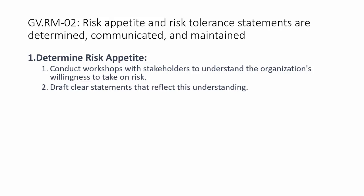Once objectives are communicated and agreed, the second step is setting the risk appetite — because until you set the boundary based on capacity, you can't drive the process. The second NIST requirement states that risk appetite and tolerance statements are determined, communicated, and maintained. The first step here is to determine the risk appetite by conducting workshops with stakeholders to understand the organization's willingness to take on risk, and drafting clear statements reflecting that understanding.